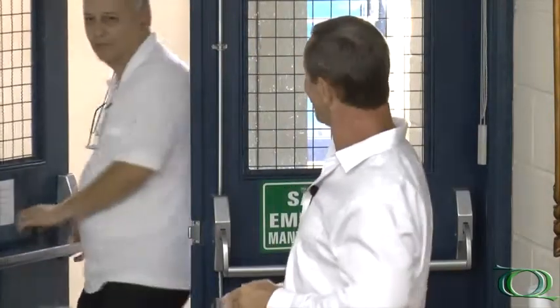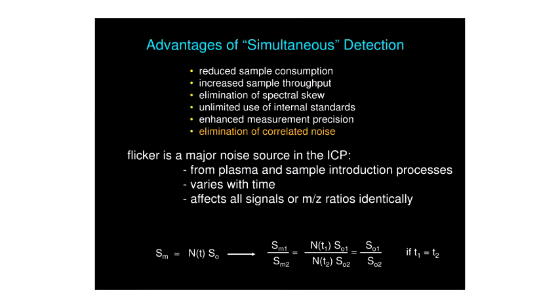The advantages of simultaneous detection, as achieved with the Mattock-Herzog instrument or a time-of-flight, include reduced sample consumption because you measure all the elements almost all the time, increased sample throughput, and elimination of spectral skew. If you are looking at a time-evolving signal — say, arsenic coming out in an HPLC chromatogram — it will grow and then decrease in time as a chromatographic peak.